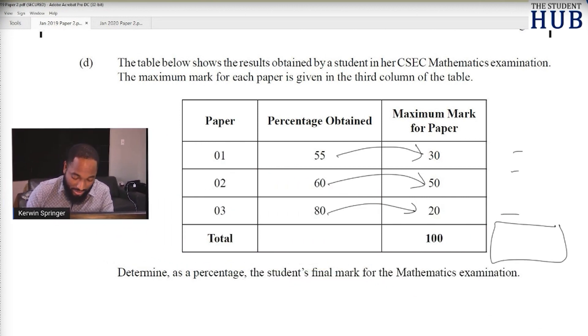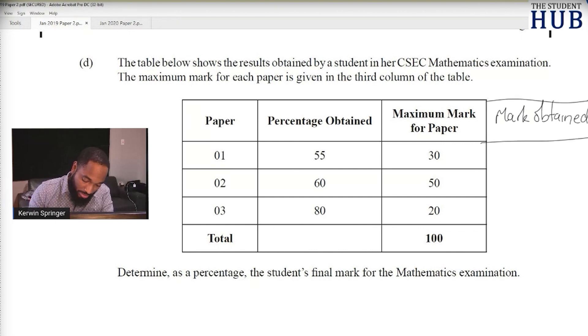When we add up those marks, we can put it over 100 and multiply. Actually, since it's out of 100, you can just assume that's the percentage. Let's find 55% of 30: you can say 0.55 times 30. For the mark obtained, 55% gives me 16.5, then 0.6 times 50 gives me 30.